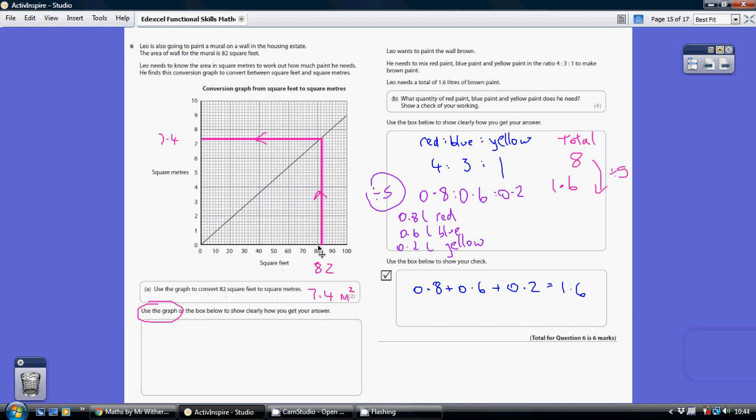Now notice there are 5 squares from 80 to 90, so we're actually going up in 2s here: 82, 84, 86, 88, 90.